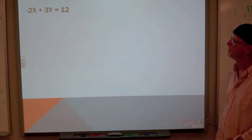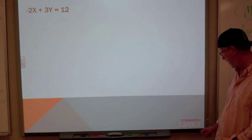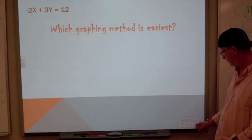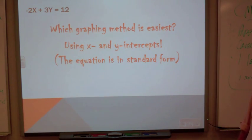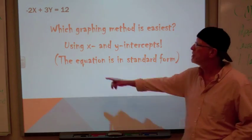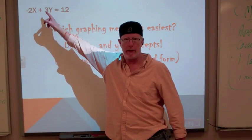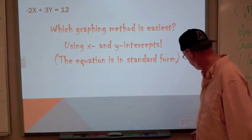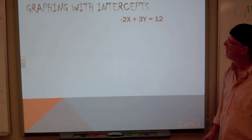Now, what about this equation? What's going to be the easiest route for graphing it? Well, we have this equation that's already in standard form. So using the x and y-intercept is going to be the easiest method. If you notice here, the negative two would be our a, the three would be our b, and the twelve would be our c.